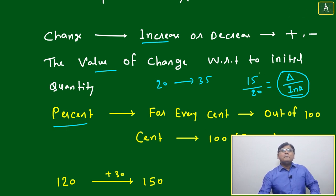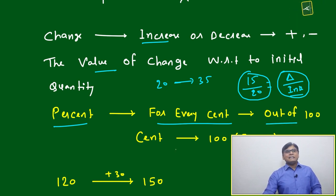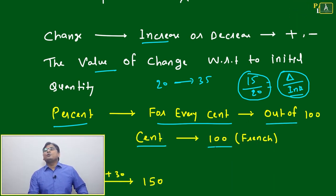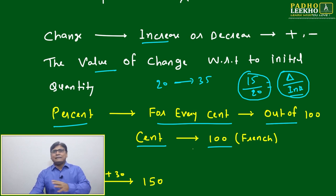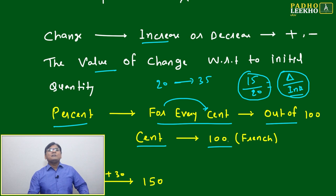Now how do we convert into percent? This change, 15 by 20, for every cent. Just multiply by 100. What is cent? Cent is a French word equal to 100. That's why we say per cent means every cent - for every cent, how much will it be?